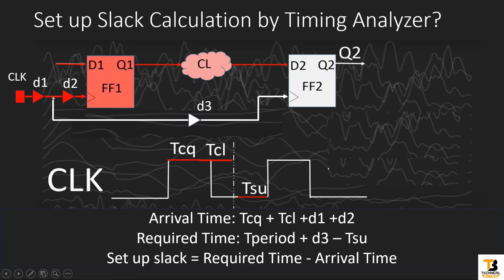Let us calculate the arrival time with respect to this clock IO pad. Assume the positive edge appears at this IO pad at 0 nanoseconds. After D1 delay it reaches the tap point, and after D2 delay it reaches the input of flip-flop 1. After D1 plus D2 delay, the edge appears at flip-flop 1, and the data at Q1 will pass after TCQ amount of delay, plus TCL amount of delay to reach the input of flip-flop 2. So the new arrival time with respect to the clock IO pad is TCQ plus TCL plus D1 plus D2.